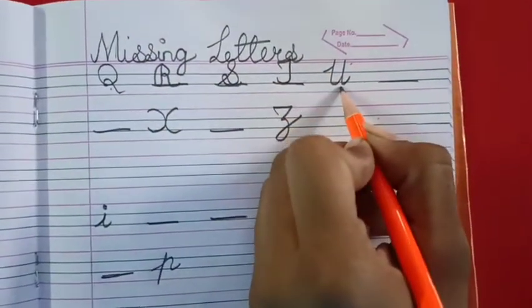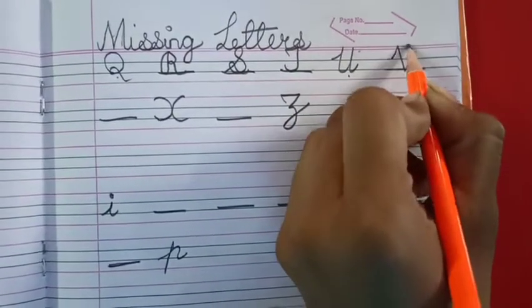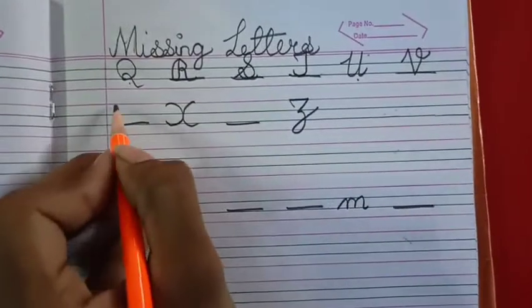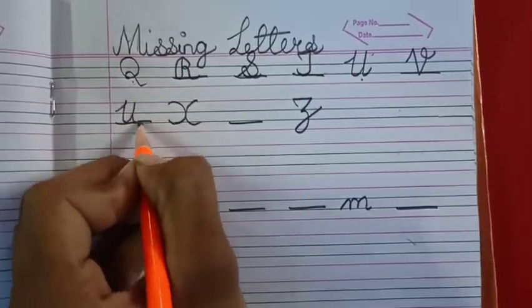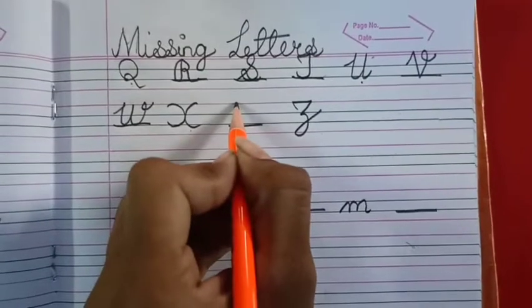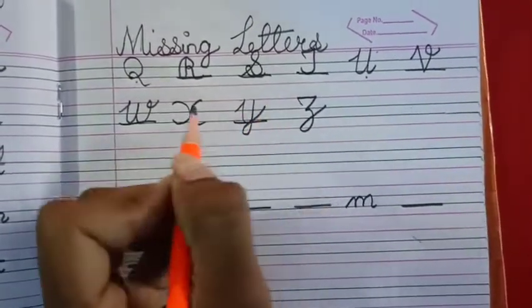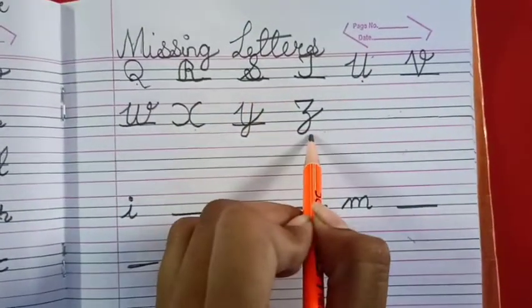The letter U is given. V, W, X is given. After X, the letter Y will come. And Z, already diya है.